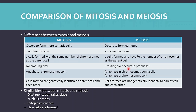A comparison of mitosis and meiosis — the differences: mitosis occurs to form somatic cells whereas meiosis occurs to form gametes. Mitosis has one nuclear division whereas meiosis has two nuclear divisions. Mitosis makes two cells which have the same number of chromosomes as the parent cell and are genetically identical to it and to each other, whereas meiosis forms four cells that each have half the number of chromosomes as the parent cell and are not genetically identical to the parent cell nor to each other.